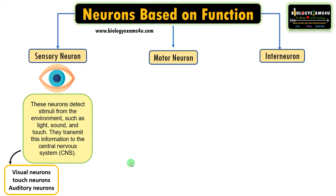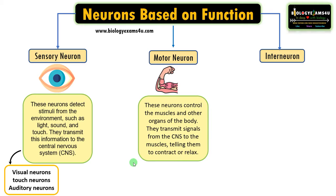Sensory neurons are further classified into different types based on the type of information they collect. For example, visual neurons, touch neurons, auditory neurons, etc. Now moving to the second type, the motor neuron.